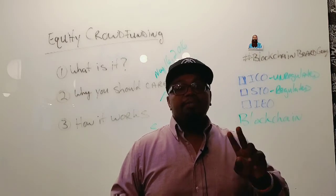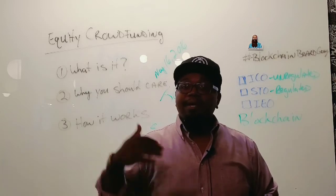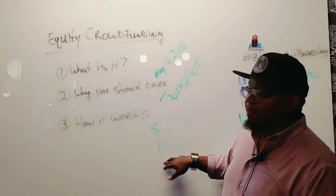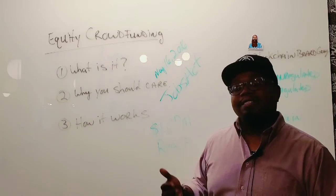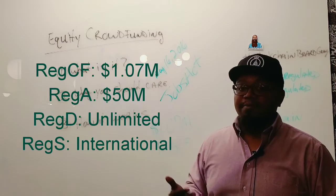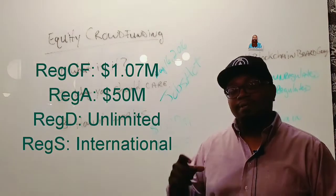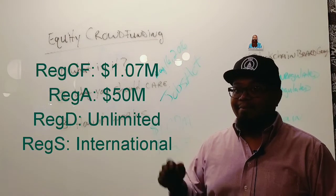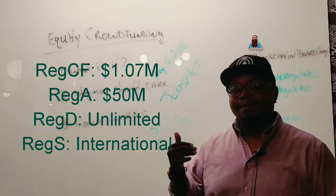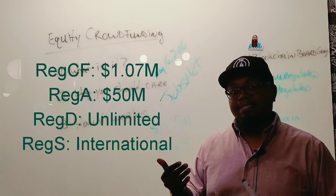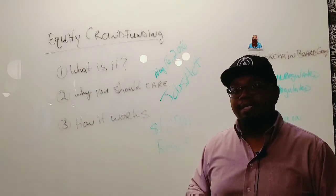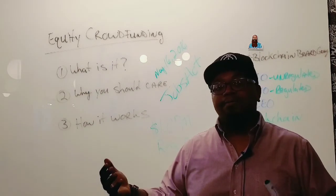In the crowdfunding world, we're focused on Reg CF, under which you can raise up to $1,070,000. But there's also Reg A and Reg A+, Reg D, and Reg S — I'll make videos for those. Under Reg A you can raise up to $50 million. Under Reg D it's unlimited but limited to sophisticated or institutional investors. Reg S is for international participants.